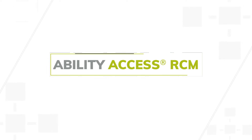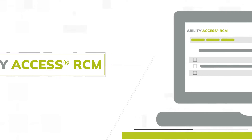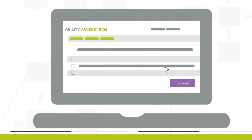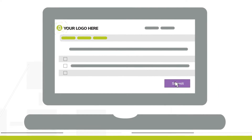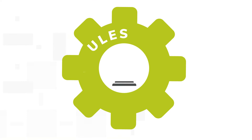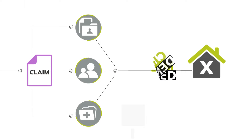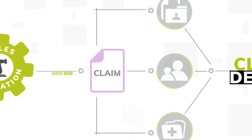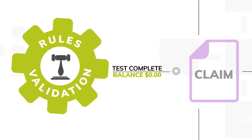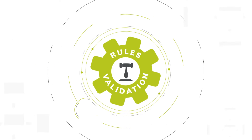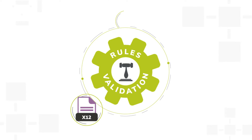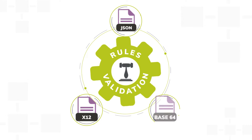Ability Access RCM was developed to give you a chance at white labeling — a clearinghouse for market value and stickiness within your current customer base. This Rules Validation API will allow you to test the claim elements to determine whether the claim is good to go or needs further adjustment before you ever submit the claim and incur the transaction charge. The nice thing about our Rules Validation engine is it can be written in X12, JSON, or Base64.